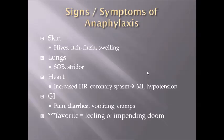For heart symptoms, you'd see an increased heart rate and hypotension — low blood pressure — which causes the high heart rate as the heart tries to compensate. Anaphylaxis can also cause coronary spasm, where heart vessels constrict, potentially leading to myocardial infarction and chest pain. It also affects the GI system, causing pain, diarrhea, vomiting, and cramping.